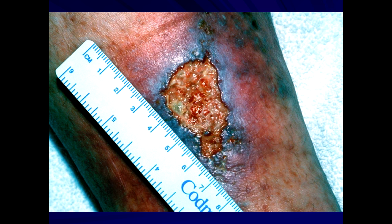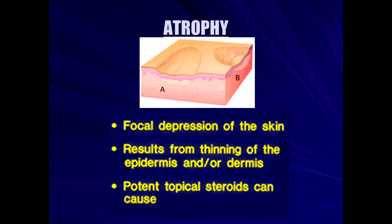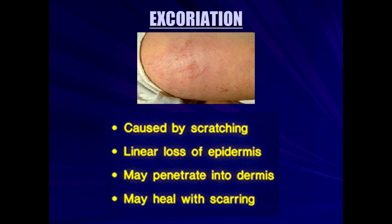Atrophy is a focal depression of the skin — not flat, not raised, but depressed, a noticeable depression. This can be seen in a variety of skin conditions but can also occur iatrogenically after injection with certain steroid shots. Intralesional or intramuscular steroid shots can in some cases induce focal atrophy. Excoriation from scratching is also a descriptor.